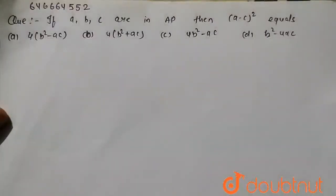Now in this question, if a, b, c are in AP then a minus c whole square equals. So in solution part, here first when a, b and c are in AP then we can write b as a plus c by 2.